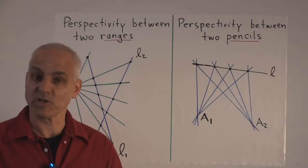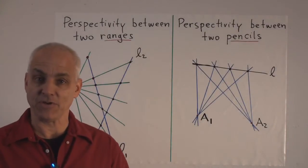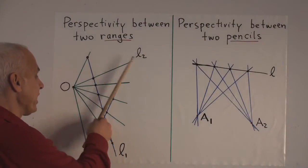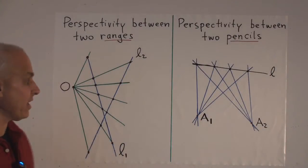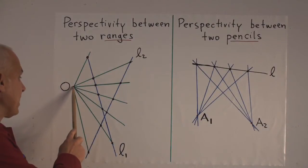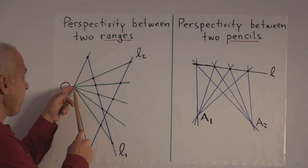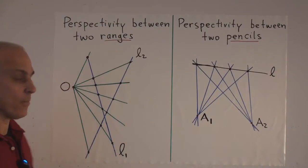We've been talking a lot about perspectivities in the last few lectures. Let me remind you that if you have a line L1 and a line L2, then a perspectivity is obtained by taking a point O outside them and connecting lines from O through L1 and touching L2.